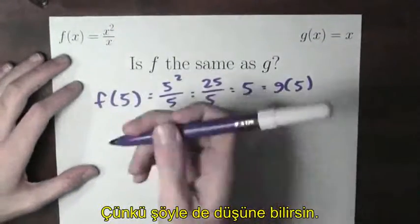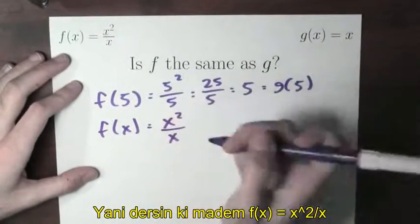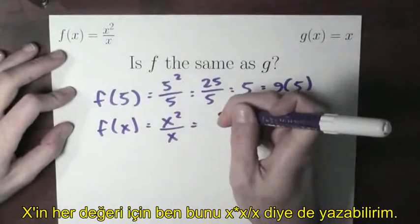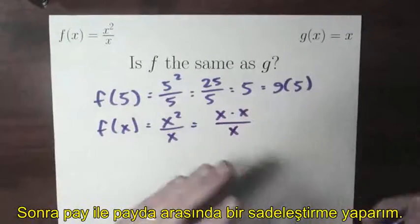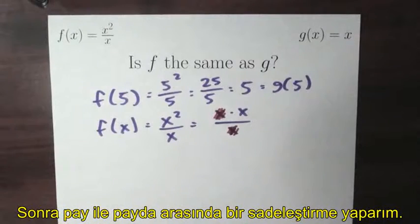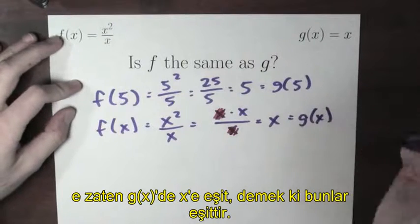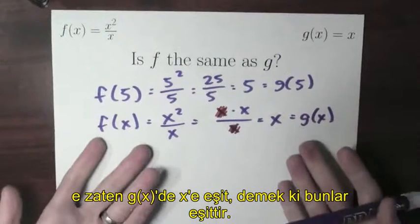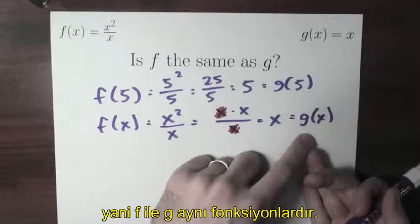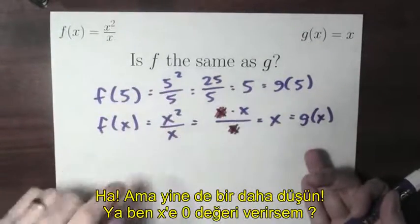You might think this always works. Because of something like this: you might want to say f of x is x squared over x, no matter what x is. You might rewrite x squared as x times x over x, and then be tempted to cancel one of those x's with the x in the denominator, and write equals x — which is g of x. So this looks like a pretty convincing argument: over here I've got f of x, a bunch of equal signs, and over here I've got g of x. So maybe that means f and g are the same function — but not so fast.